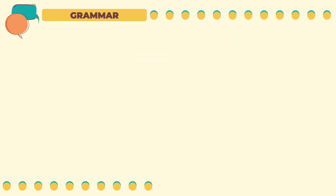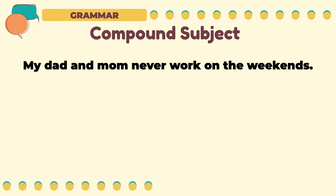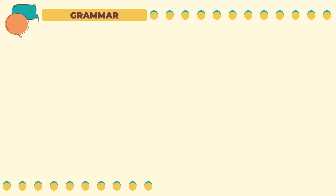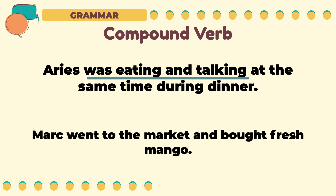A simple sentence may also have a compound subject. For example, 'My dad and mom never work on the weekends' — the compound subject is 'my dad and mom.' 'Anthony, his best friend, and his cousins will watch the free concert tonight' — there are three subjects: Anthony, his best friend, and his cousins. Aside from a compound subject, a simple sentence may also have a compound verb. 'Aries was eating and talking at the same time during dinner' — the subject is Aries, and the compound verb is 'was eating and talking.' 'Mark went to the market and bought fresh mango' — the subject Mark did two things: went to the market and bought fresh mango.